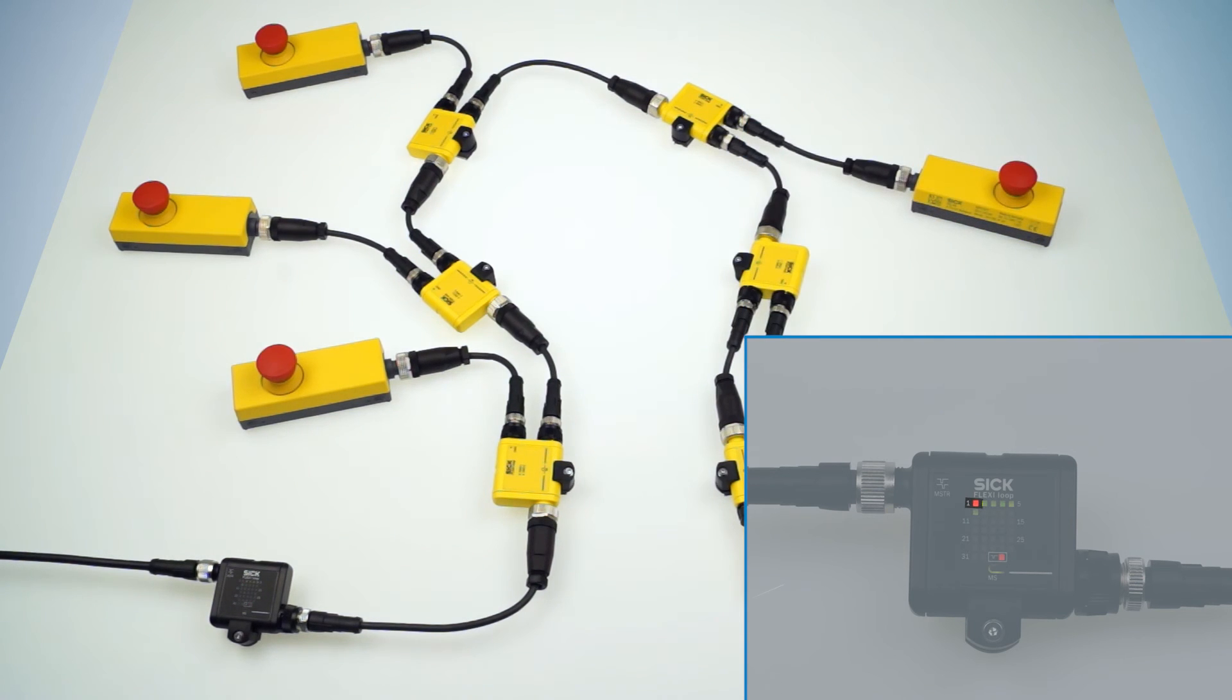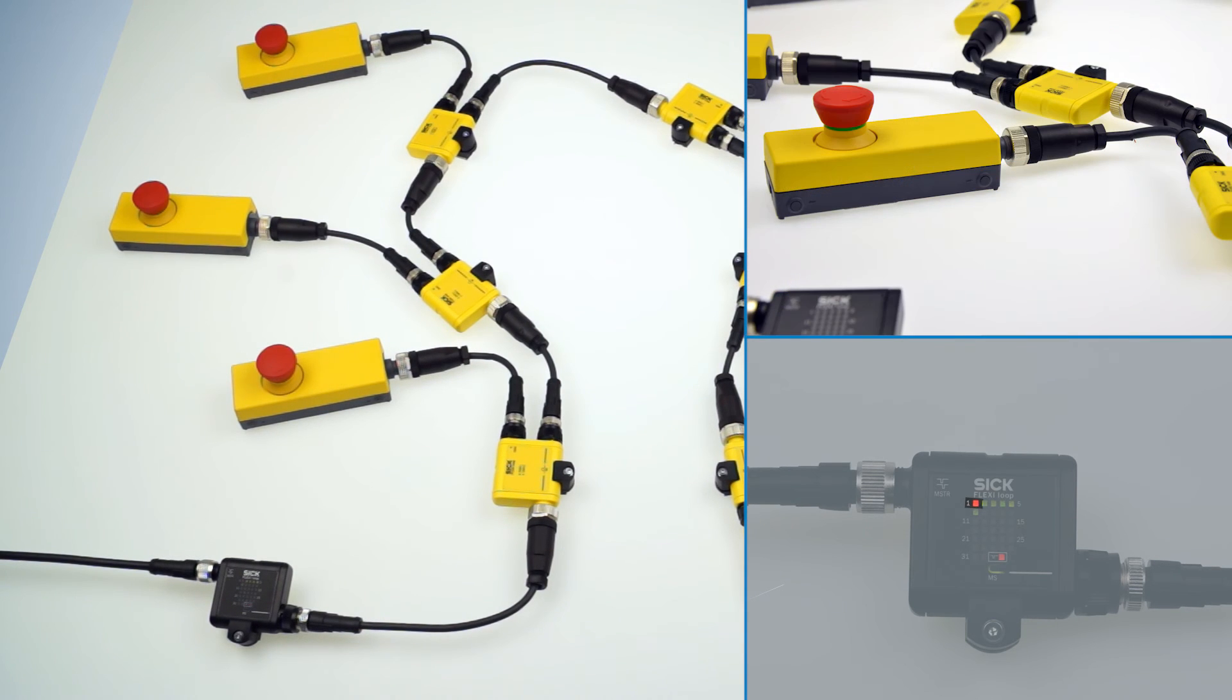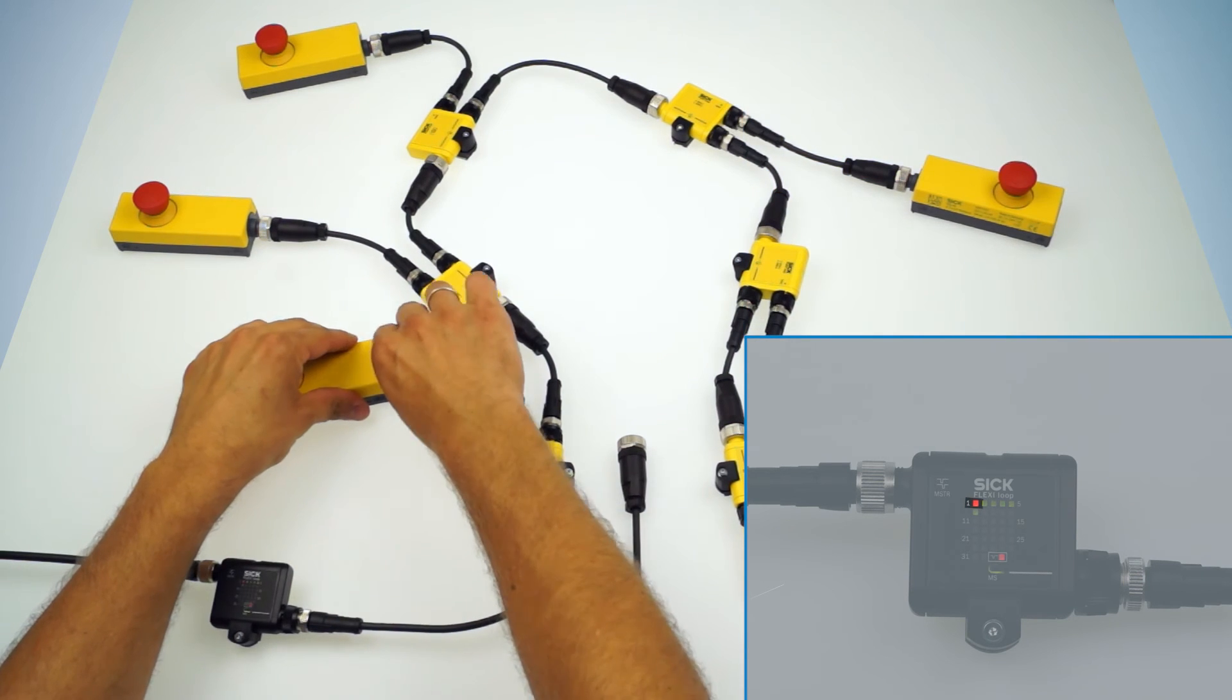And Node LED 1 is flashing red. So a discrepancy error occurred. By checking the sensor and the cabling we are easily able to figure out that there is a cable break. So we just need to change that.